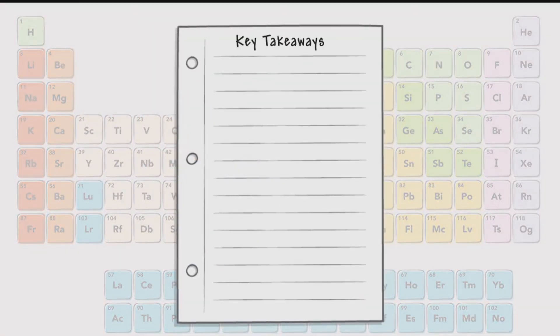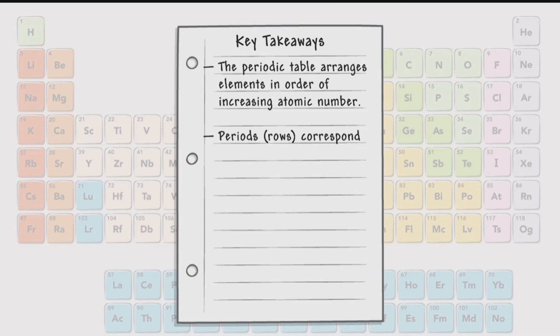Key takeaways. The periodic table arranges elements in order of increasing atomic number. Periods, or rows, correspond to electron energy levels.